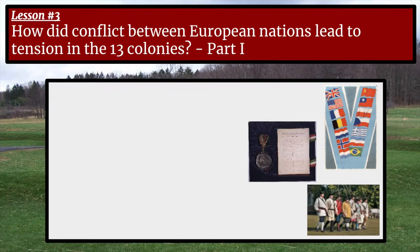Hello, ladies and gentlemen, and welcome to lesson number three in our Freedom Unit. Today's essential question is: how did conflict between European nations lead to tension in the 13 colonies? It's a very long essential question, but it really does summarize what this lesson is about. The events we're going to discuss today have a very large impact on the 13 colonies and actually set in motion the events that eventually lead to the American Revolution. Please write down the essential question, and we will then start the lesson.